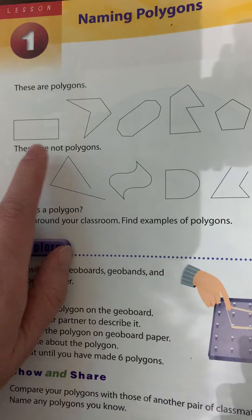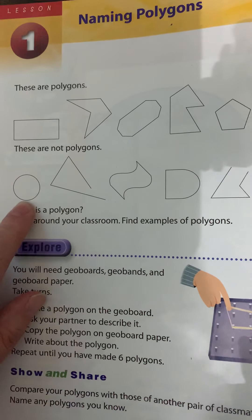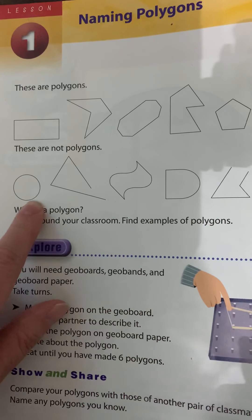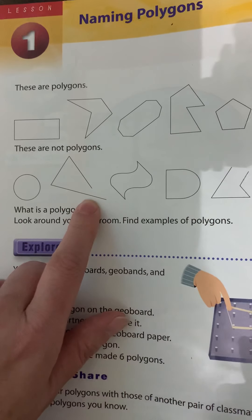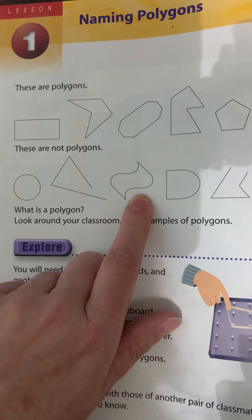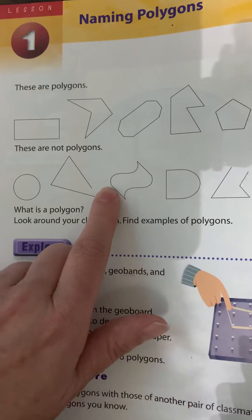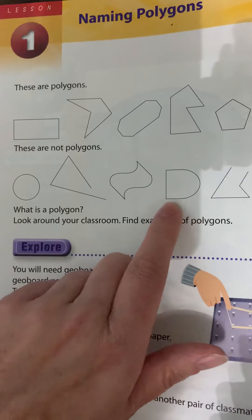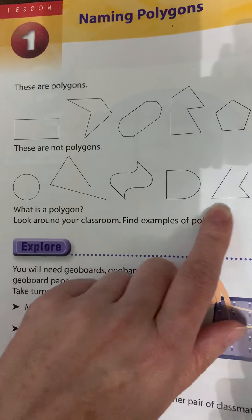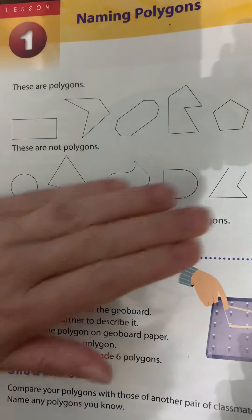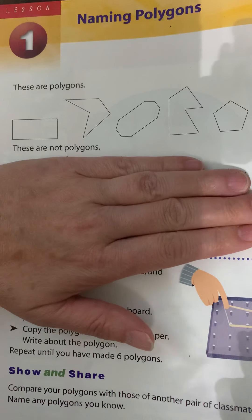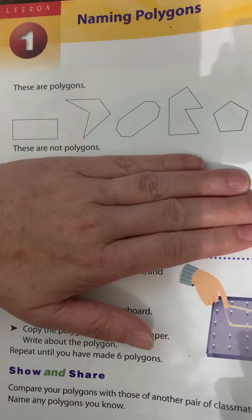Down here, it says these are not polygons. This one is not a polygon because it has a round shape. This one is not a polygon because it's not closed — there's an opening. This one is not a polygon because it's got some curves. This one also has a curve, so it is not a polygon. And this is not a polygon because it was left open. So these ones are not polygons, and these ones up here are polygons. They all have straight sides and they are all closed shapes.